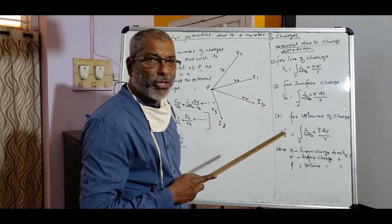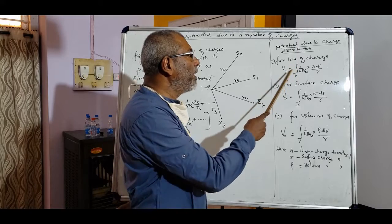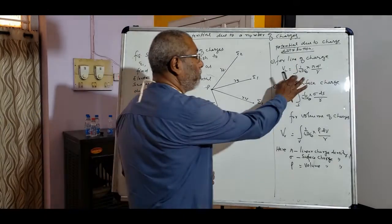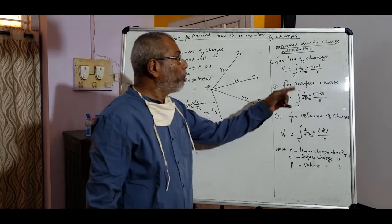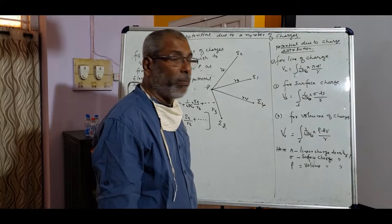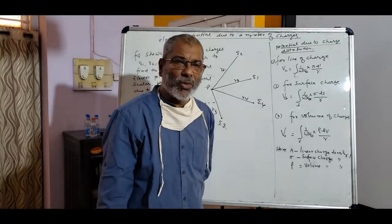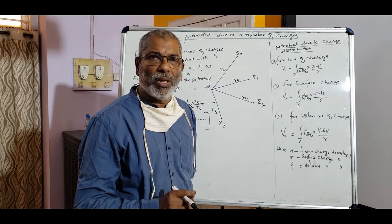In this case, Vl, potential due to the line of charge, Vl is equal to line integral l, 1 by 4 pi epsilon 0 lambda dl by r.